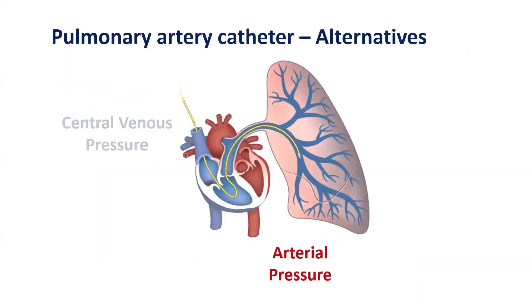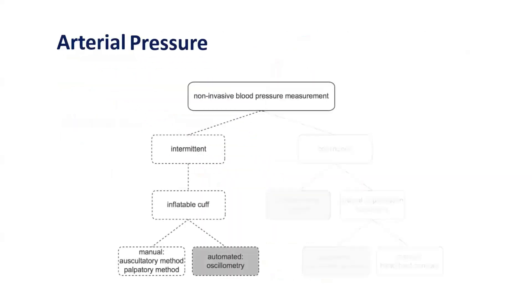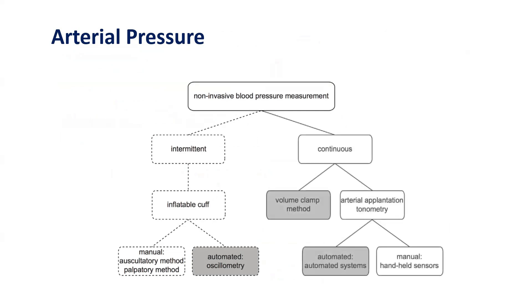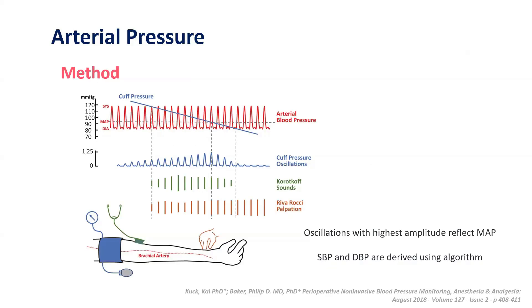Coming on to arterial pressure monitoring. Arterial pressure can be measured non-invasively by intermittent inflatable cuffs — either manually by auscultatory or palpatory methods, or automated using oscillometry. During arterial pressure monitoring, a cuff is placed on a major artery, preferably the brachial artery, and inflated above systolic pressure.